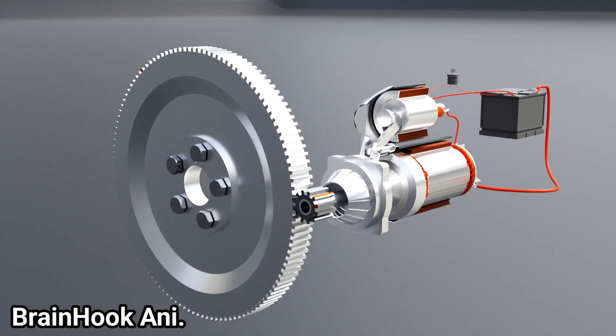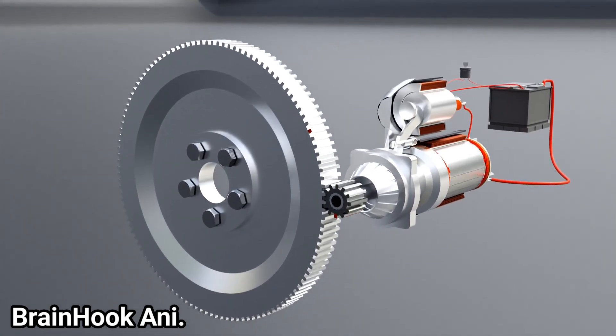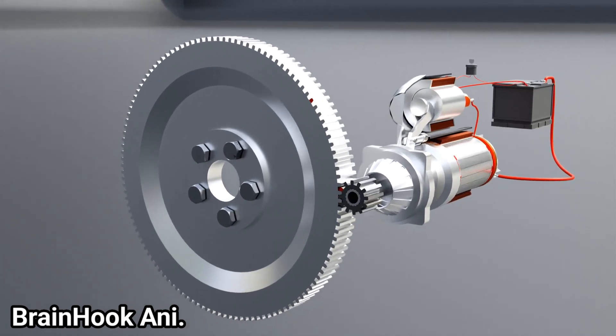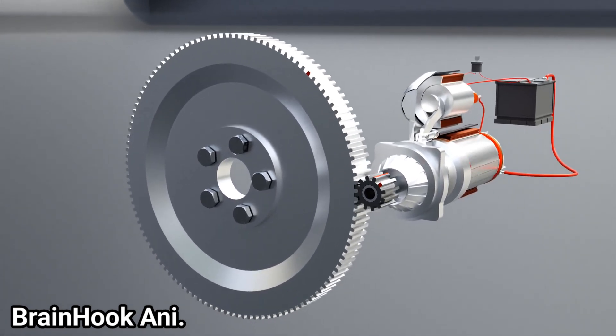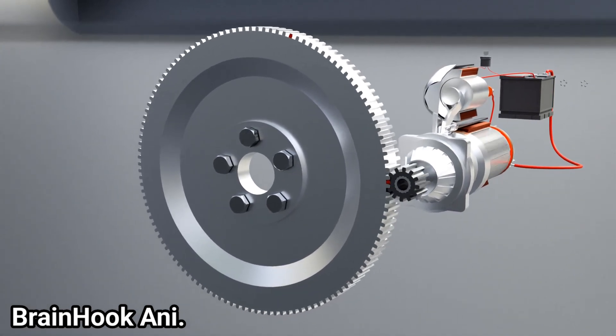We can notice that the pinion is considerably smaller than the flywheel. Usually, the gear ratio of the flywheel and pinion ranges from 10 to 1 to 15 to 1. As a result, it is possible to achieve high torque. Let's know more details.